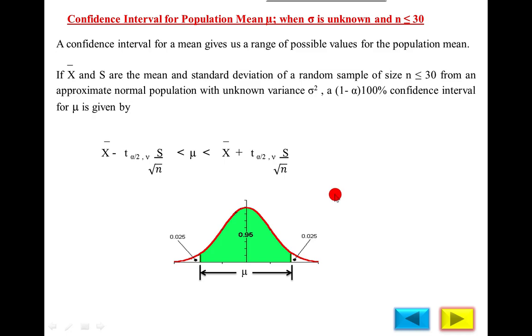Bismillahirrahmanirrahim. In this video, we will study confidence interval for population mean μ when σ is unknown and n is less than or equal to 30. Here n is the sample size and σ is the population standard deviation.